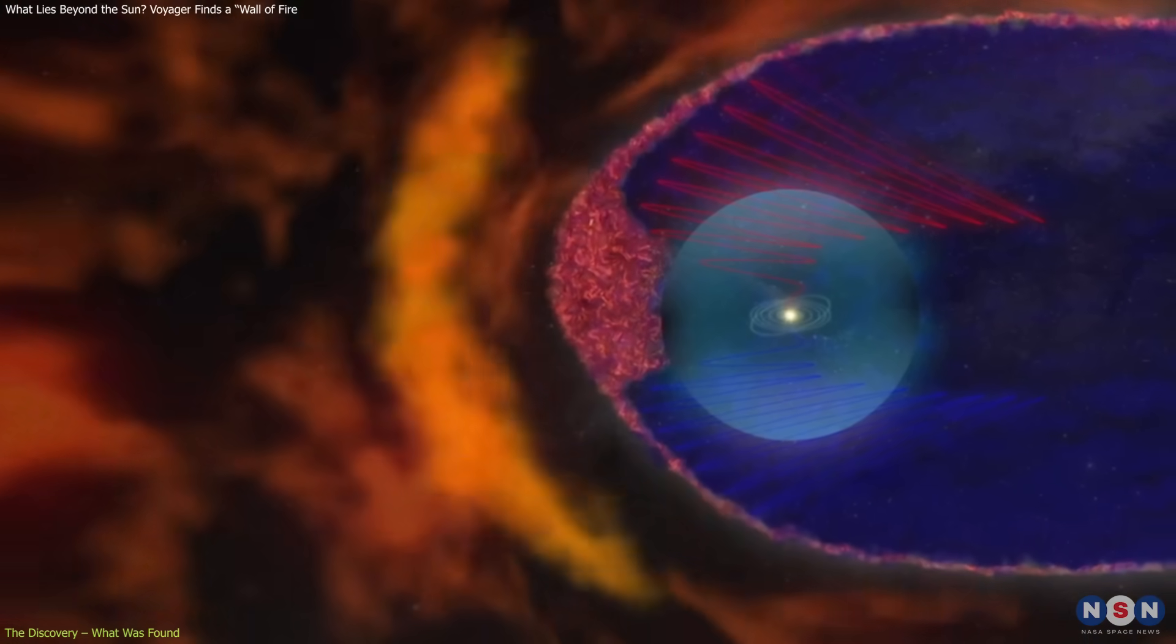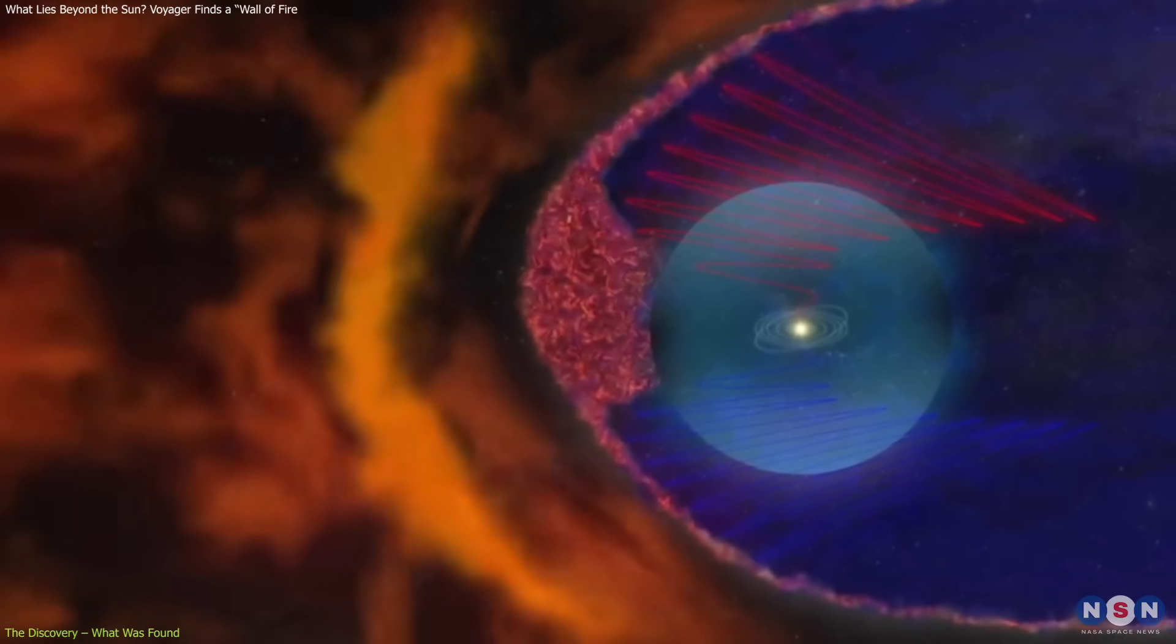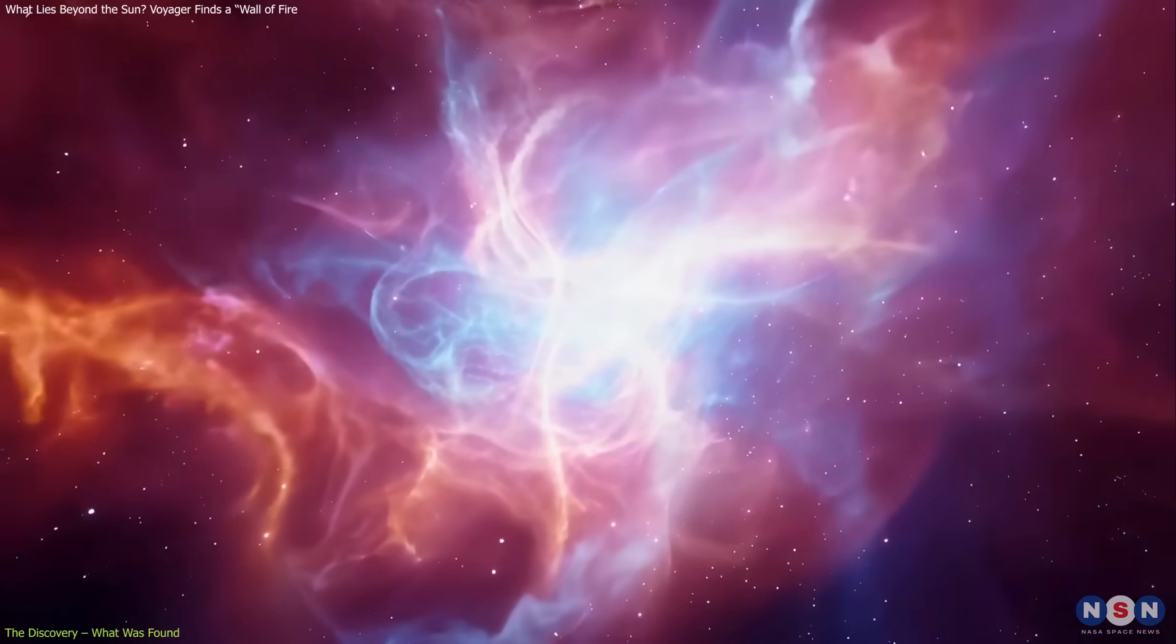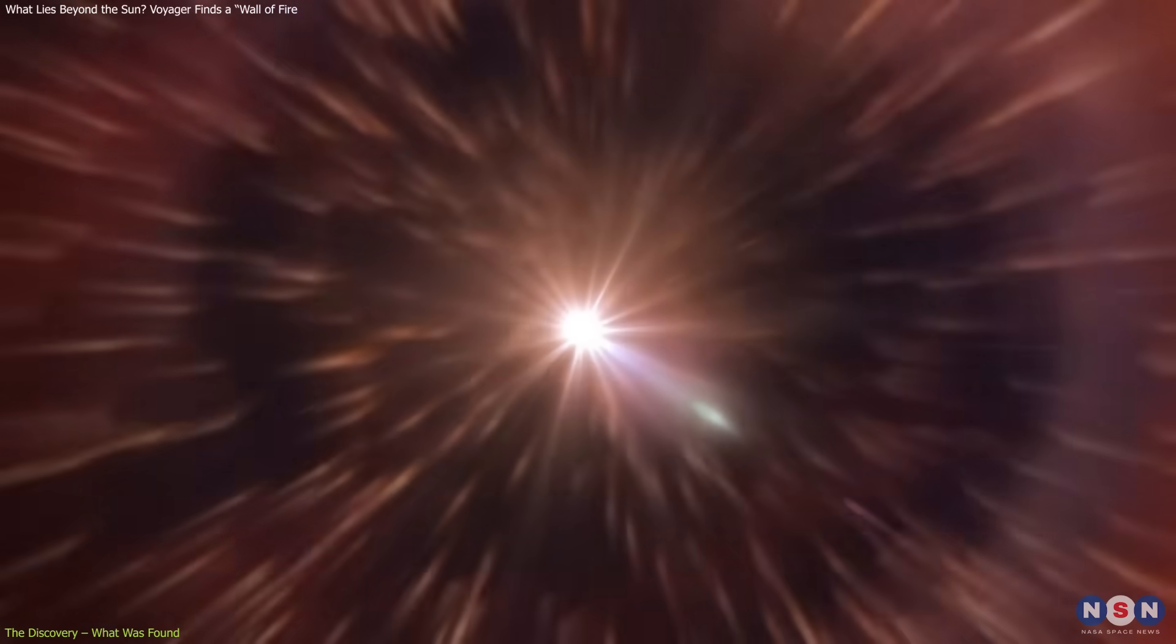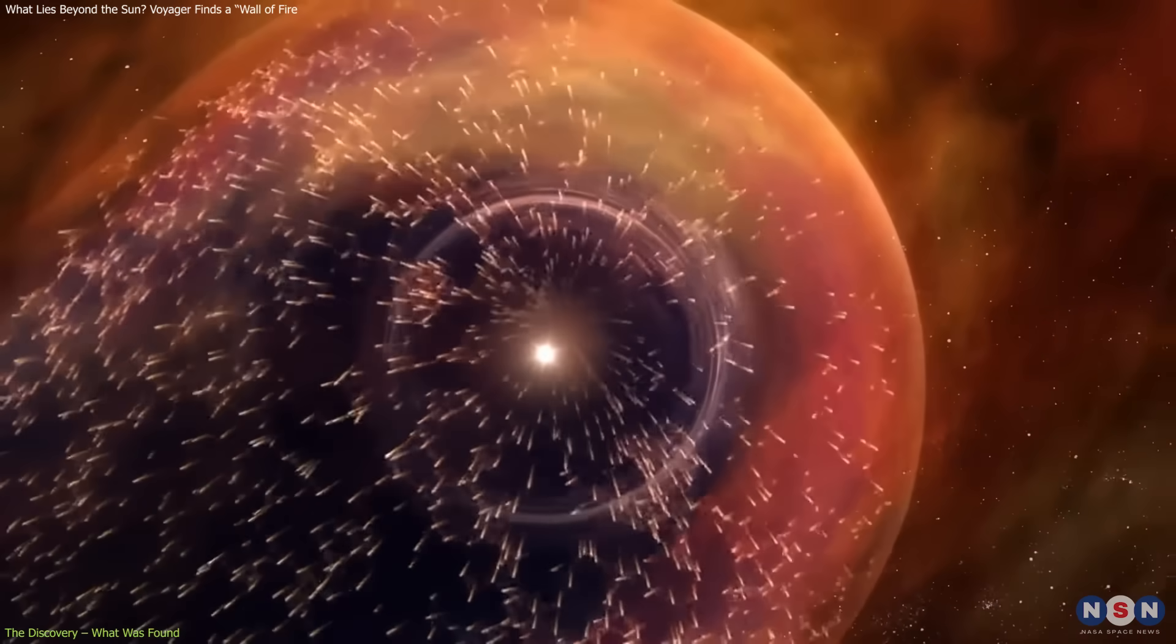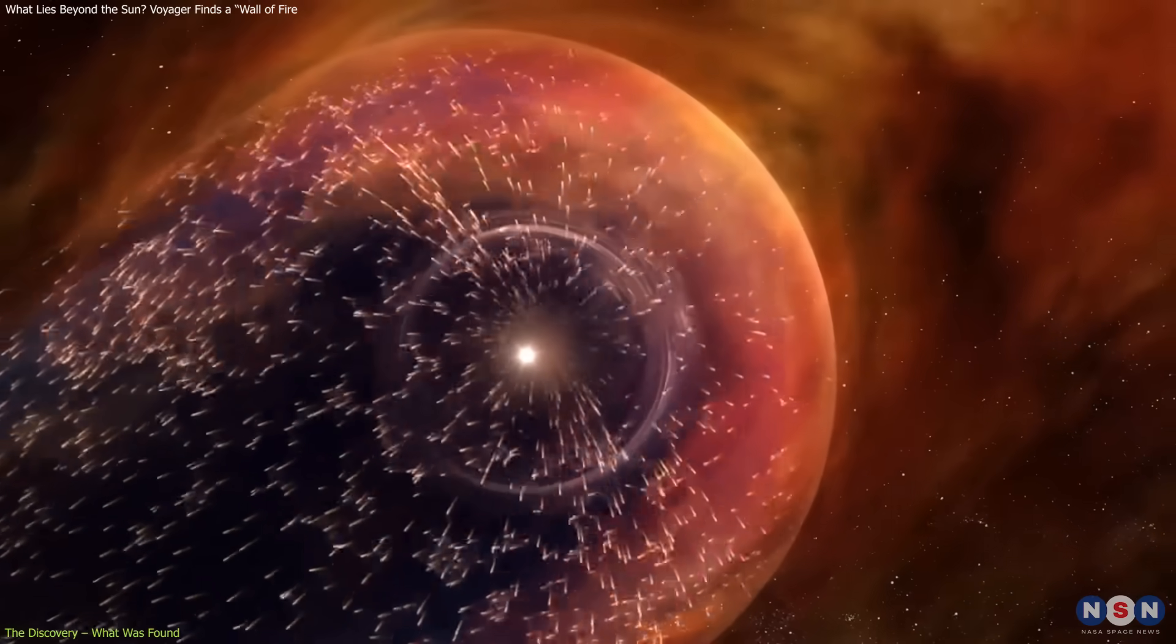The heliopause is the invisible threshold where the sun's solar wind, its constant stream of charged particles, fades, and the interstellar medium takes over. For decades, it was assumed this transition was relatively clean and predictable.